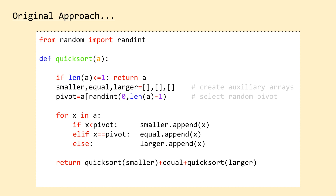Being that we're writing the algorithm in Python, this approach seems natural and is certainly easy to understand. The downside is that on each call of the Quicksort algorithm, we increase our memory footprint because we create three new arrays and fill them with copies of the values in the input array. So in this video, our goal will be to reimplement Quicksort without creating new duplicate arrays on each function call.